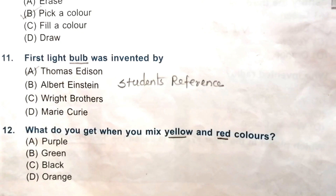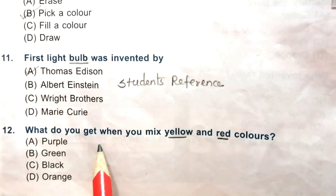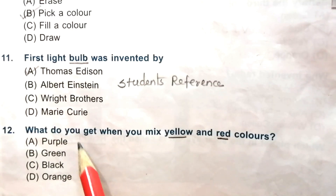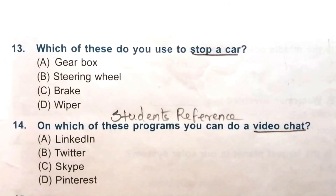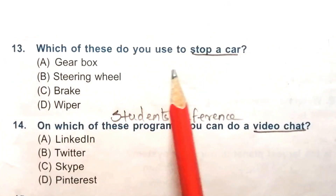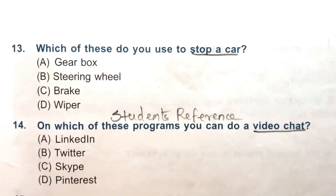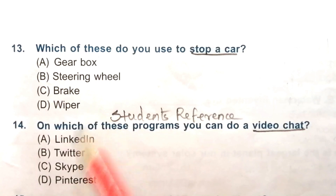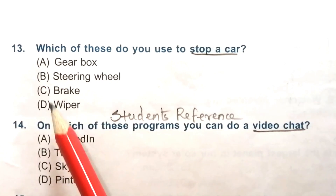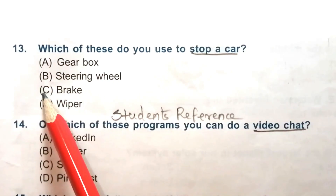Question 11: The first light bulb was invented by Thomas Edison, Albert Einstein, Wright brothers, or Marie Curie. The answer is A, Thomas Edison. Question 12: What do you get when you mix yellow and red colors? Purple, green, black, or orange. The answer is D, orange. Question 13: Which of these do you use to stop a car? Gearbox, steering wheel, brake, or wiper. The answer is C, brake.